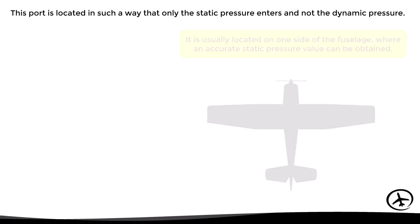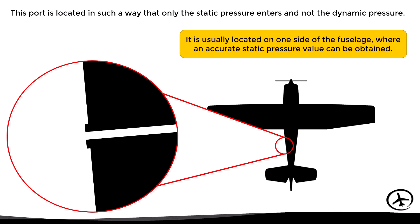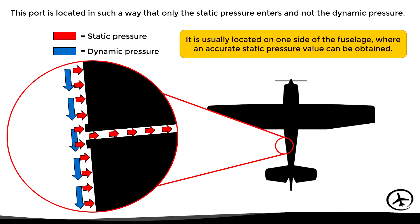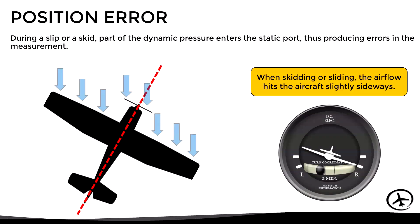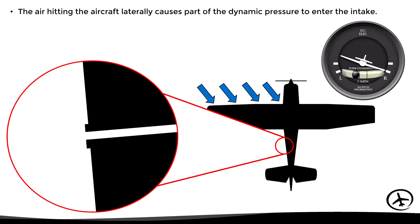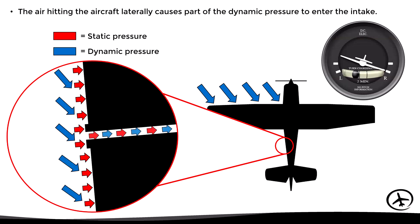Normally this port is located on one side of the fuselage where a precise pressure value can be obtained. As we know, the static pressure is exerted in all directions while the dynamic pressure is exerted only in the opposite direction to the plane's path. With this design, only static pressure enters the static port, thus obtaining an adequate measurement. However, this design also has some position errors — if the aircraft performs a skid or a slide, part of the dynamic pressure will enter the static port, producing errors in the measurement. This occurs because in a skid or slide the airflow not only hits the plane from the front but slightly from one side, causing some dynamic pressure to enter the static port.